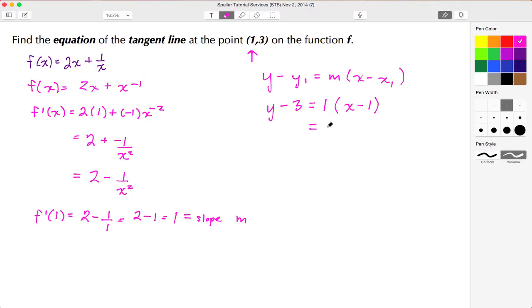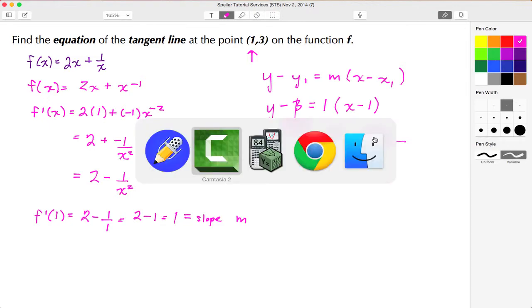And I'm going to add 3 to both sides, so when doing that, these 3s cancel. I have y is equal to x + 2, and this here is the equation for the tangent line. Let's go ahead and pull up the calculator so we can verify this graphically.